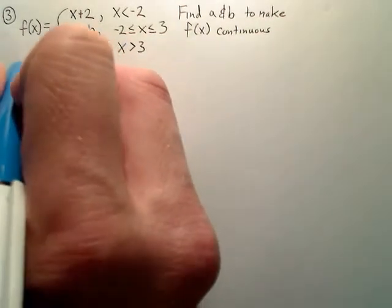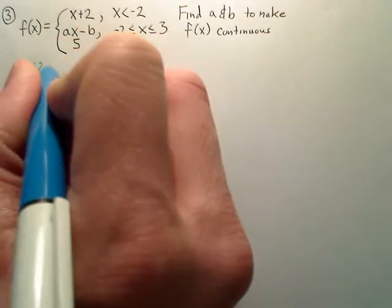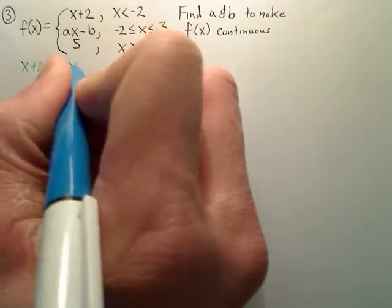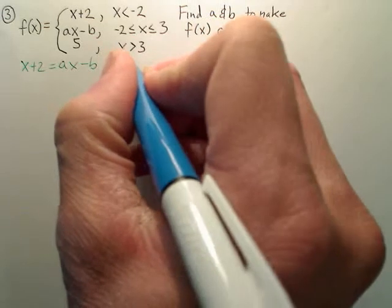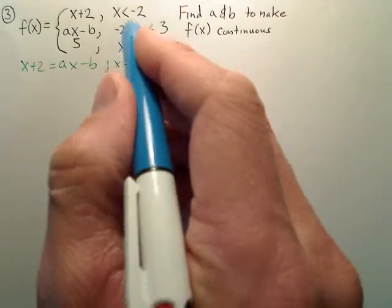So I've got to make sure that x plus 2 equals ax minus b when x equals negative 2, because x equals negative 2 is where they meet.